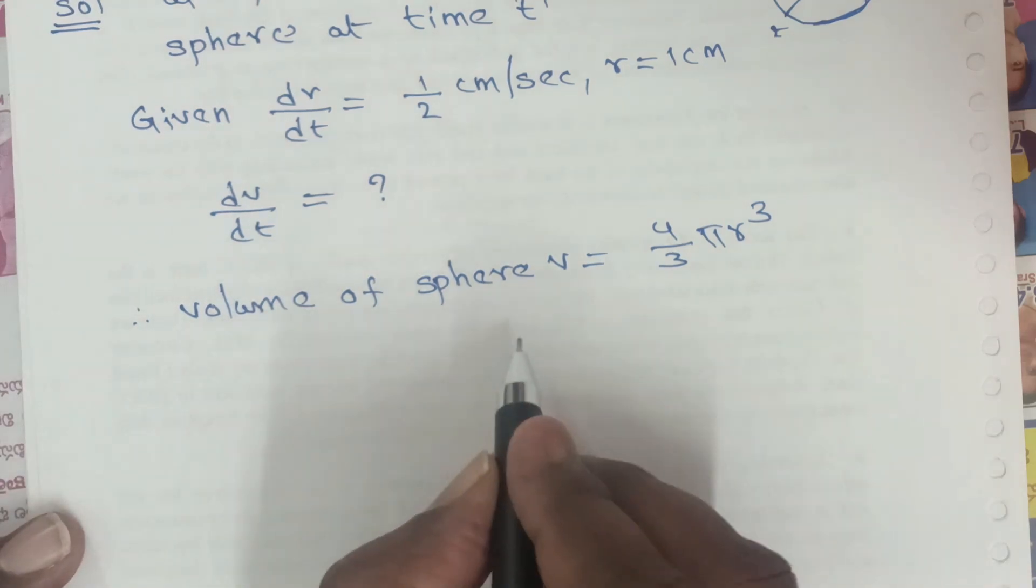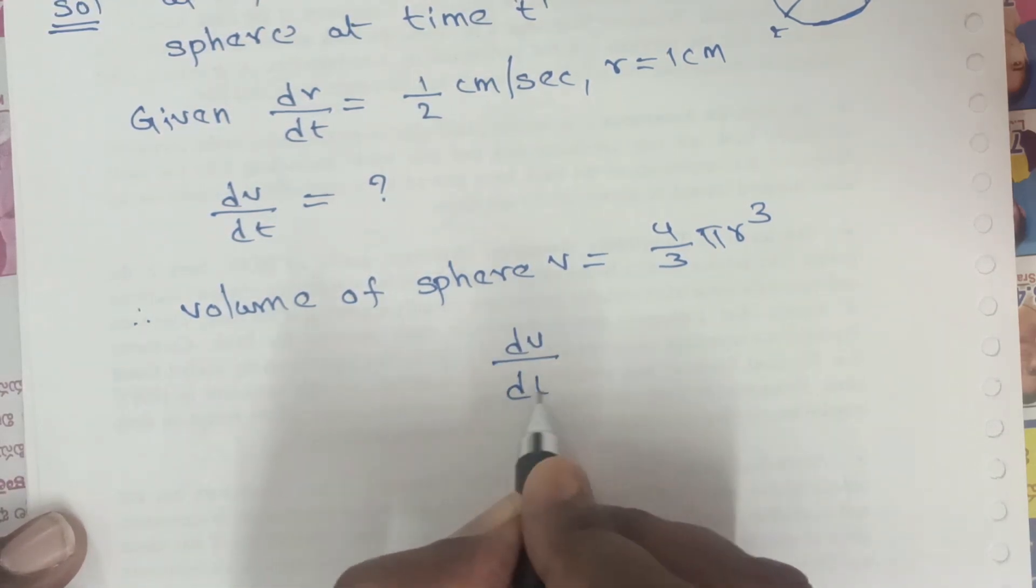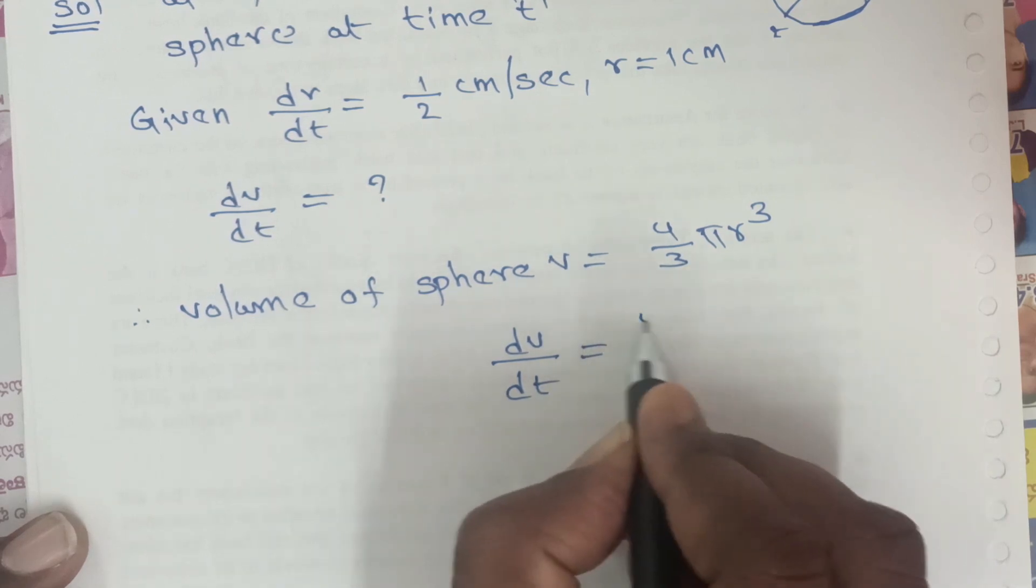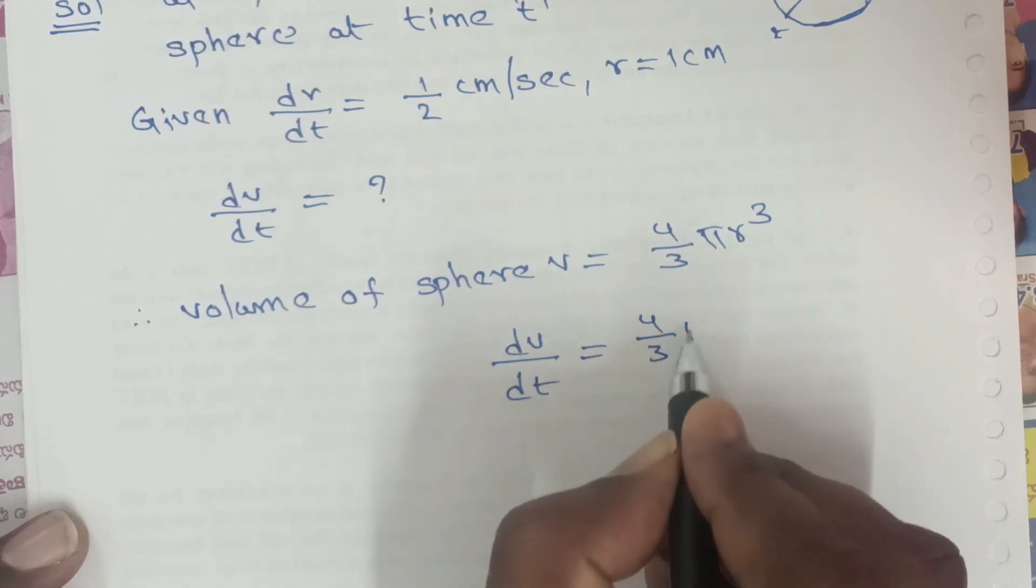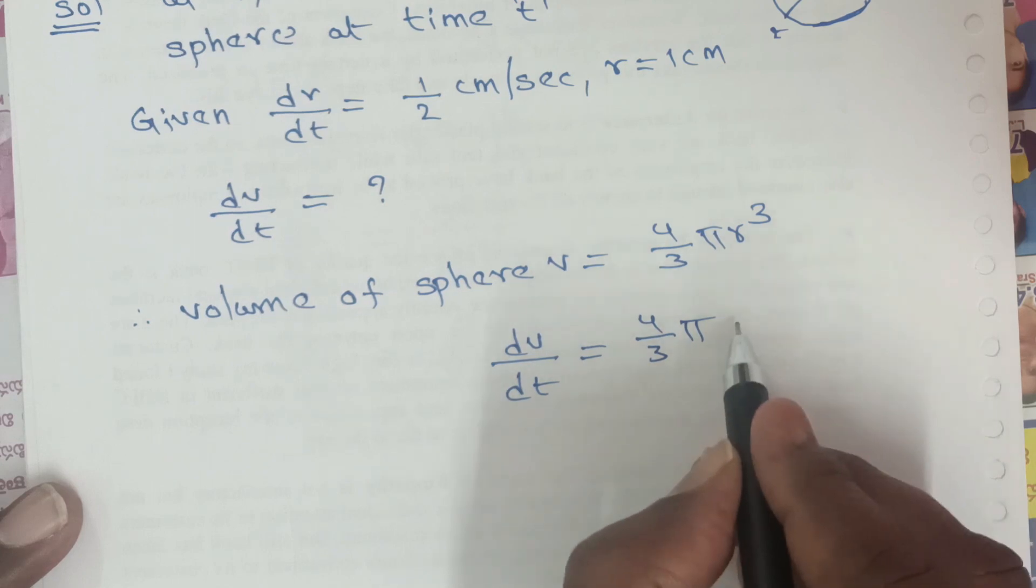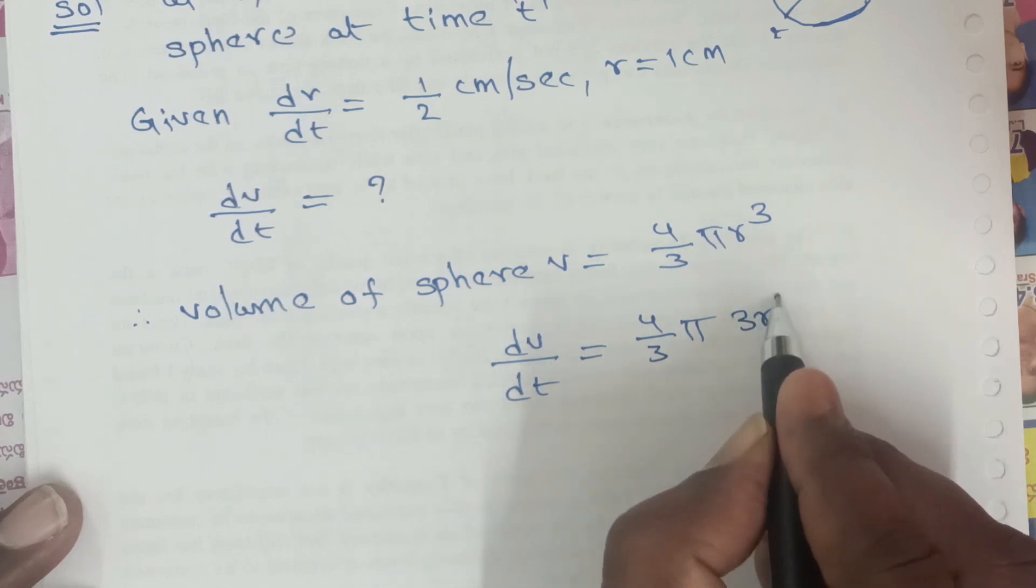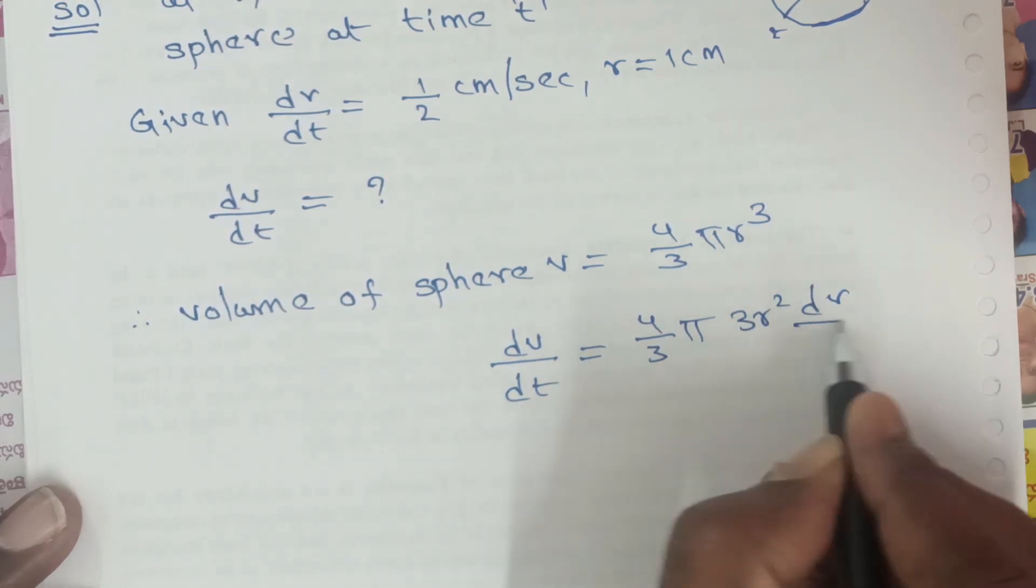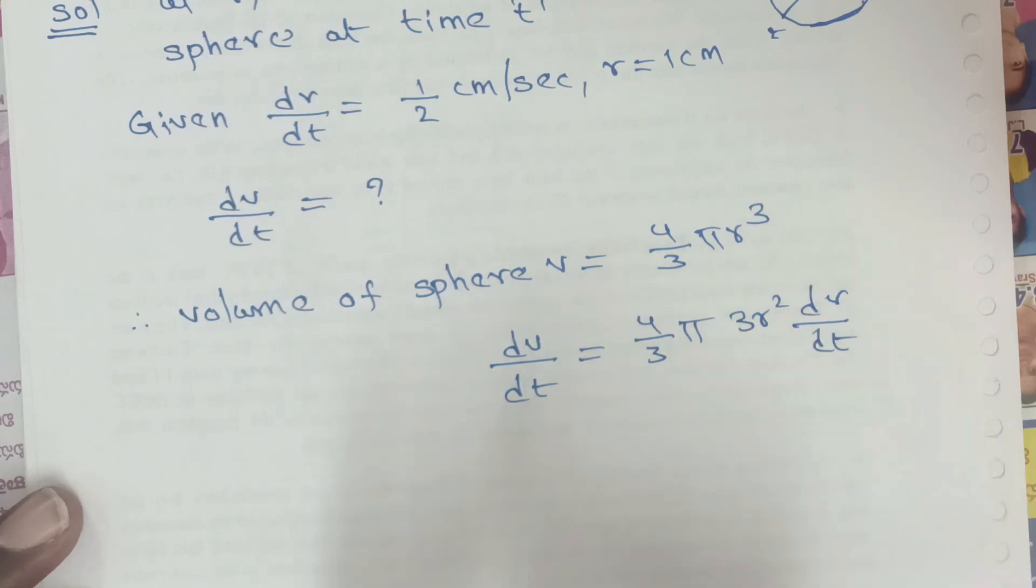The derivative of r³ is 3r² times dr/dt, so dv/dt equals 4/3 π times 3r² times dr/dt.